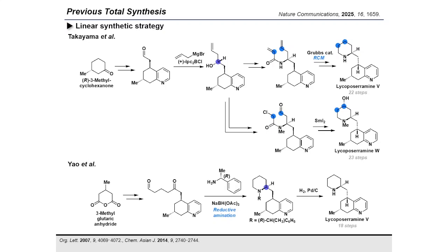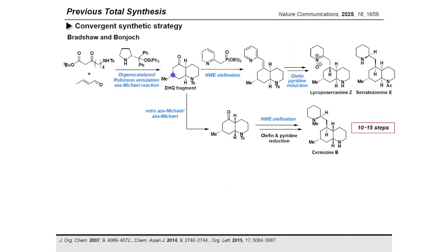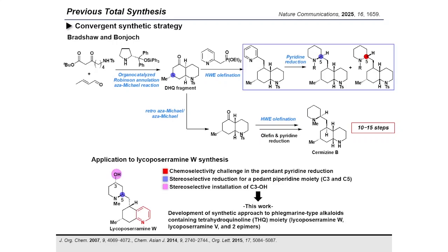In a convergent strategy, Brusoe and Bungard utilized organocatalytic Robinson annulation and aza-Michael reaction to construct the decahydroquinoline unit. Following HWE olefination with 2-pyridyl-O-methylphosphonate and subsequent pyridine hydrogenation, they achieved the total synthesis of lycoposilamine Z, selatozamine E, and ceramizine B in 10 to 15 steps.